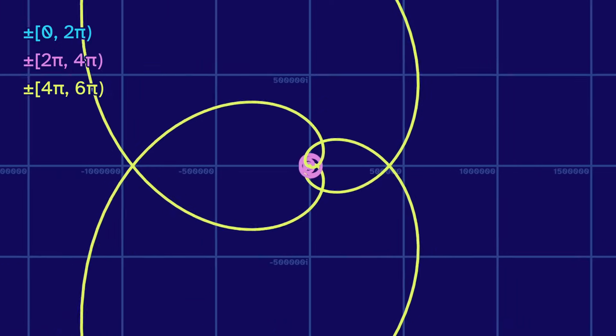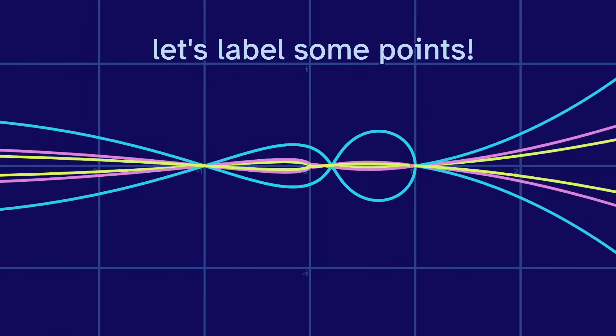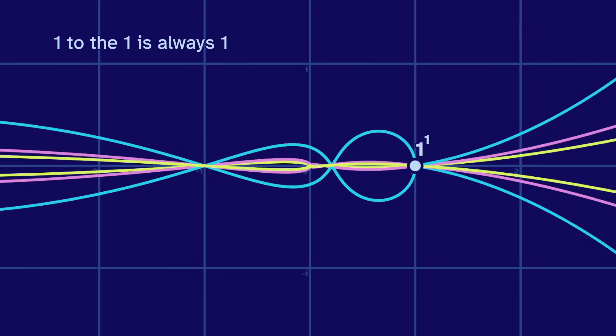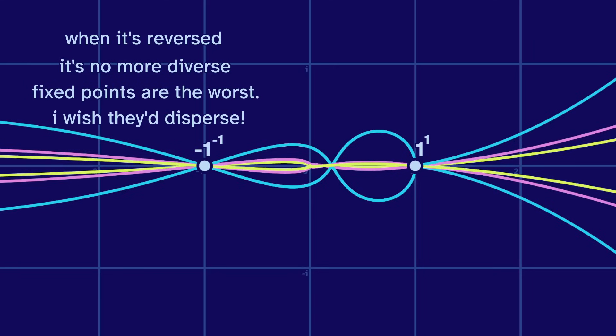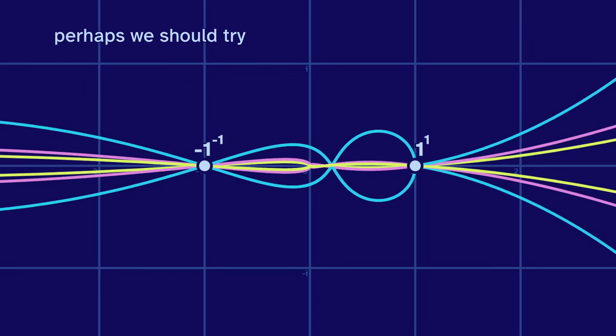What else can we learn? Let's label some points. First, the outputs of 1. It's just 1. 1 to the 1 is always 1. This is unfun, and we've only just begun. When it's reversed, it's no more diverse. Fixed points are the worst. I wish they'd disperse. Perhaps we should try another input nearby.